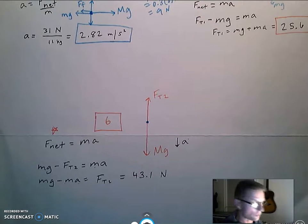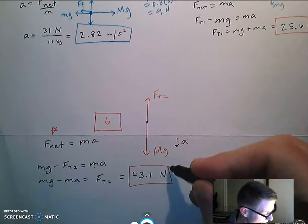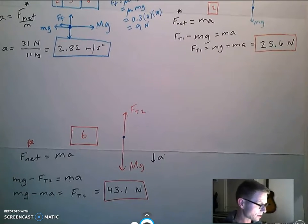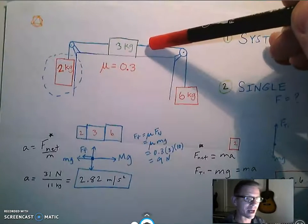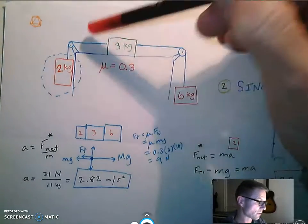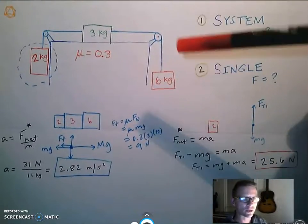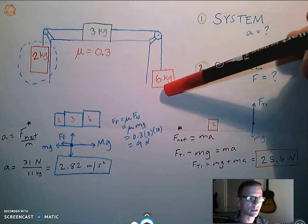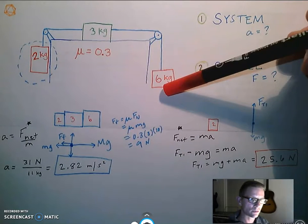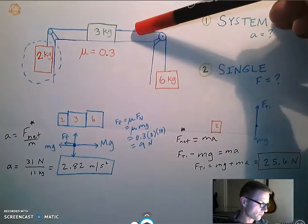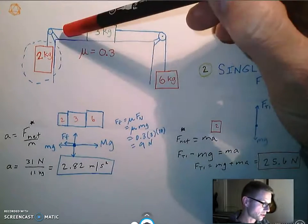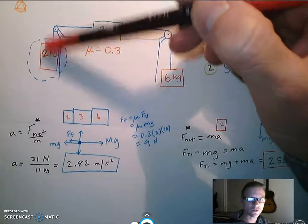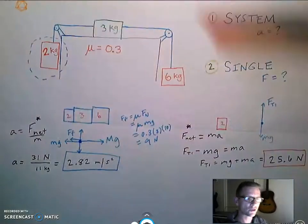Now that checks out, because I did the math. First of all it's greater than the 25.6, which I expect, because if you go back to this mass I expect this tension to be greater if it's accelerating in this direction. I also did the math for each one. I get the same acceleration. If I look at the two forces on this, I get 2.82. If I looked at the three forces on this - you have tension, tension and friction going this way - I get 2.82. And if you look at the two forces on this, I get the acceleration of 2.82.